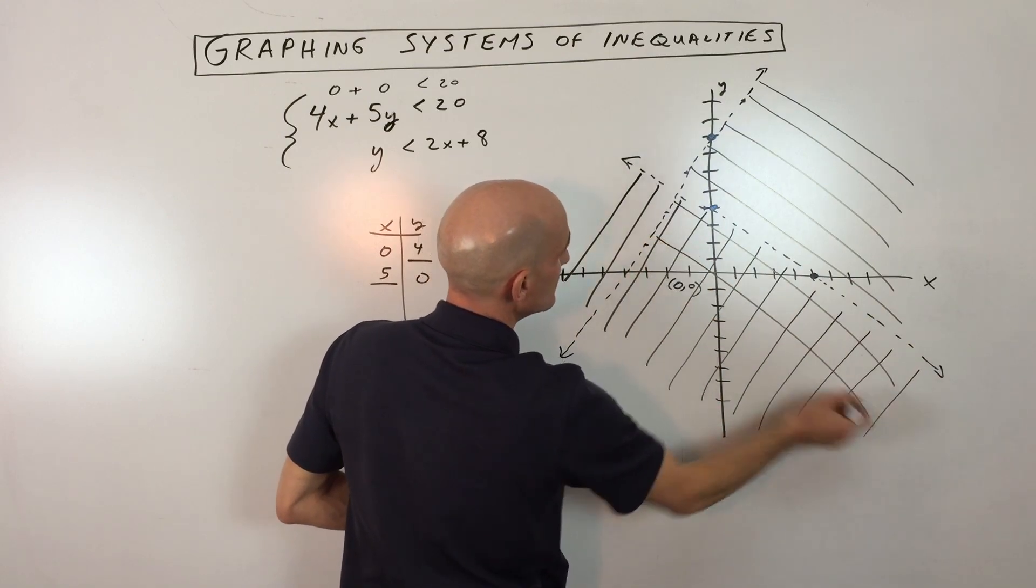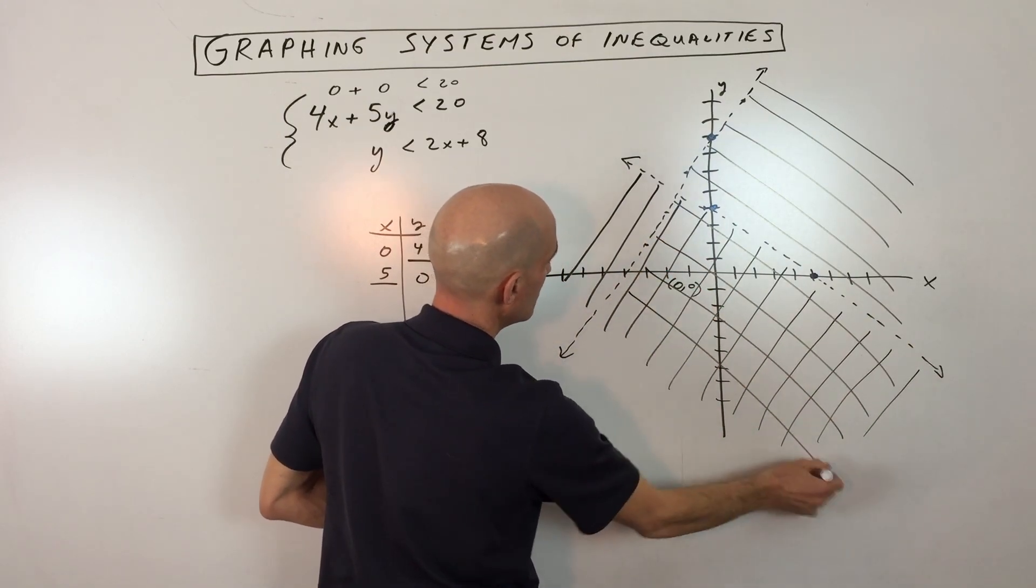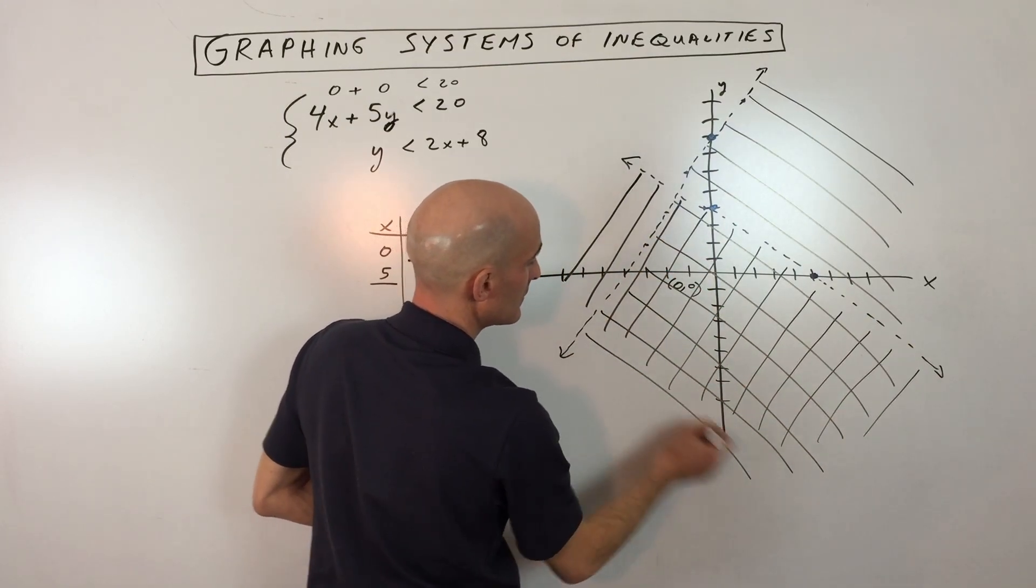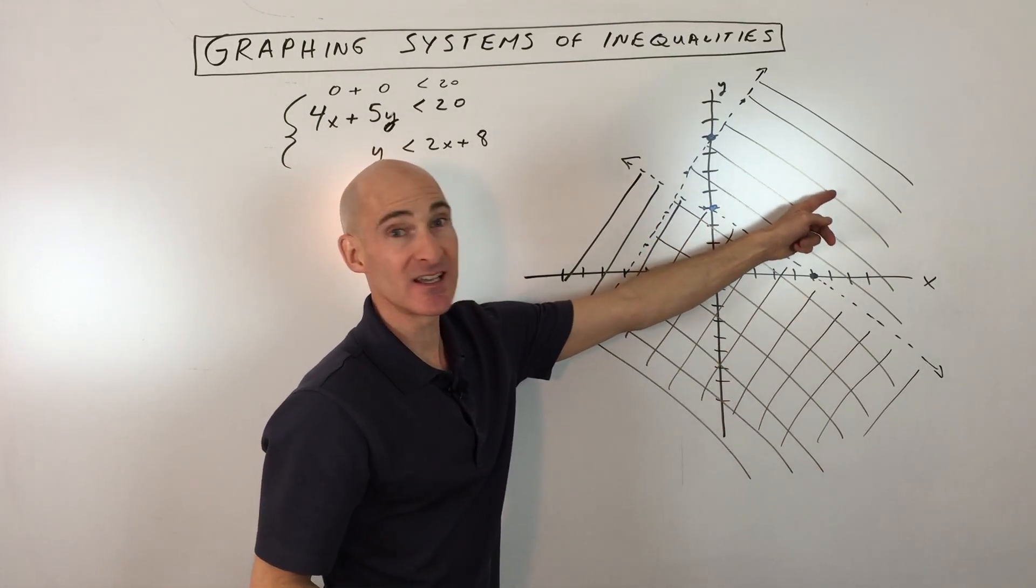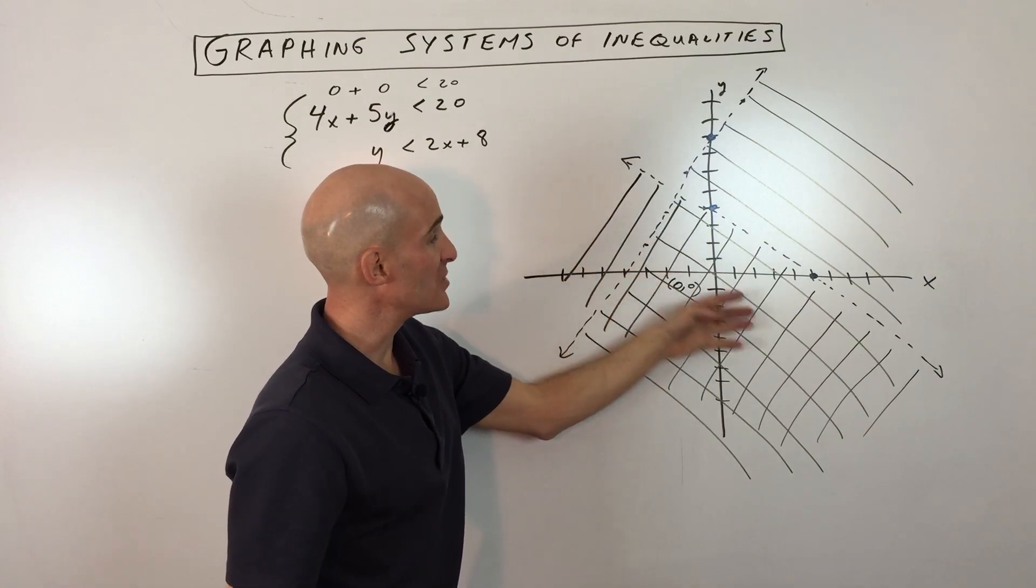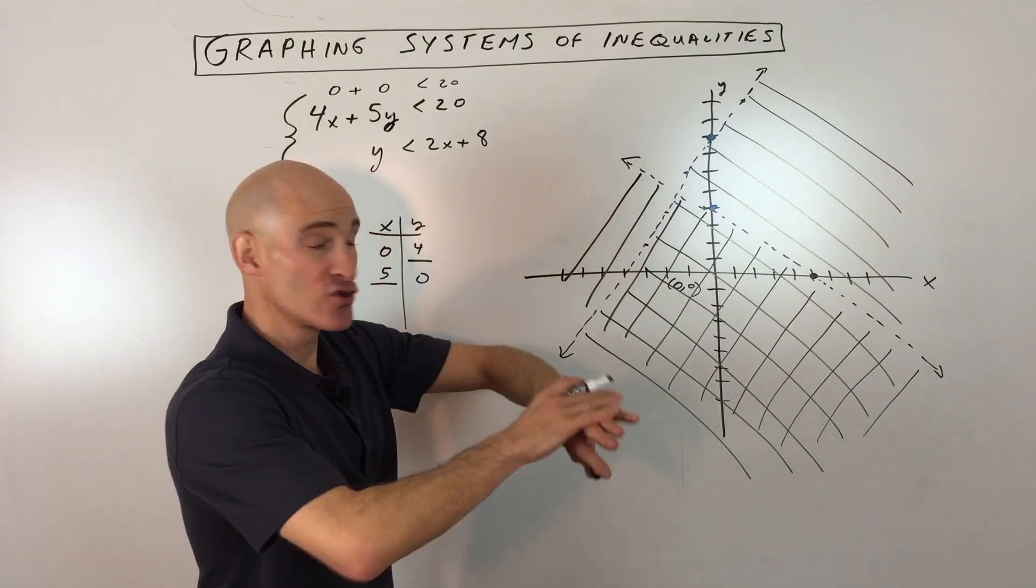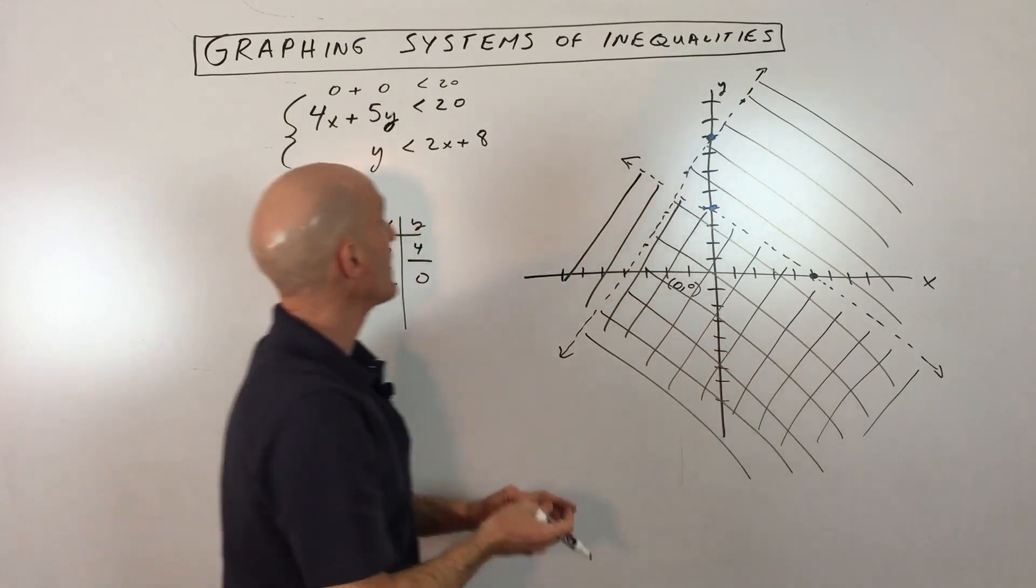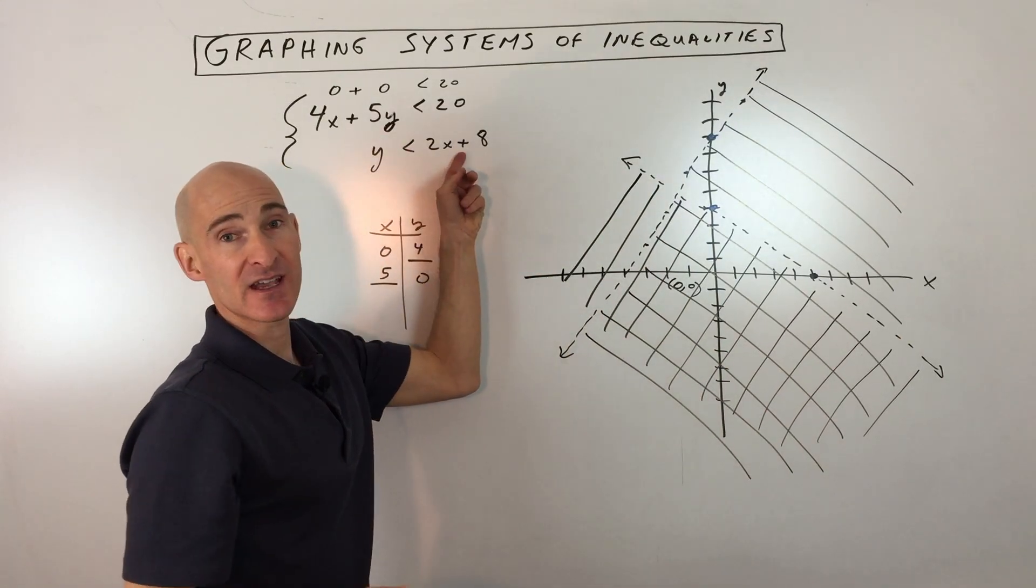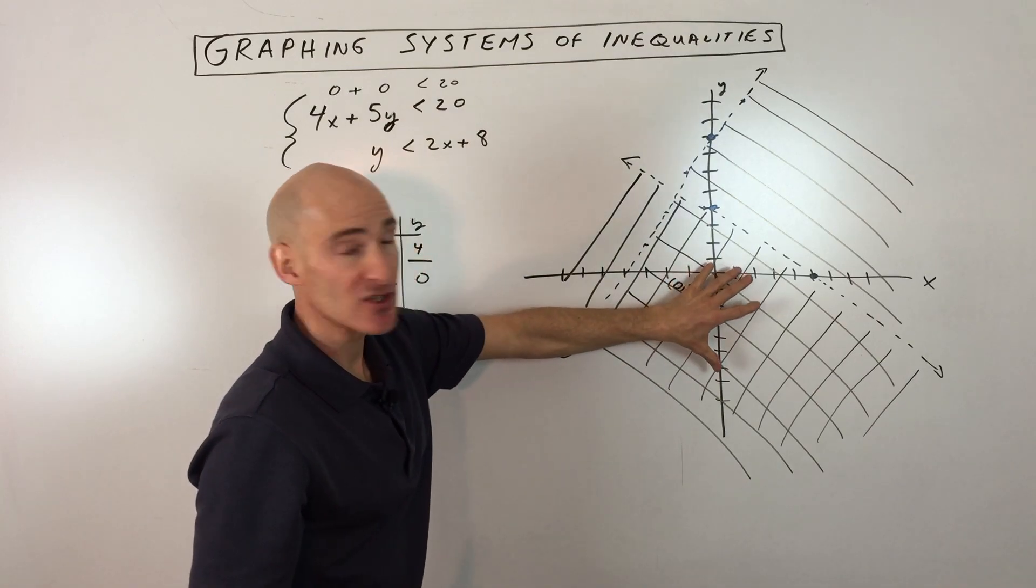What do you notice? You can see this cross-hatched region right here. See here it's singly shaded, singly shaded, doubly shaded. So that's where the two regions are overlapping. So any point in this region here will make this inequality true and the second inequality true. So any point in here is going to be our solution.